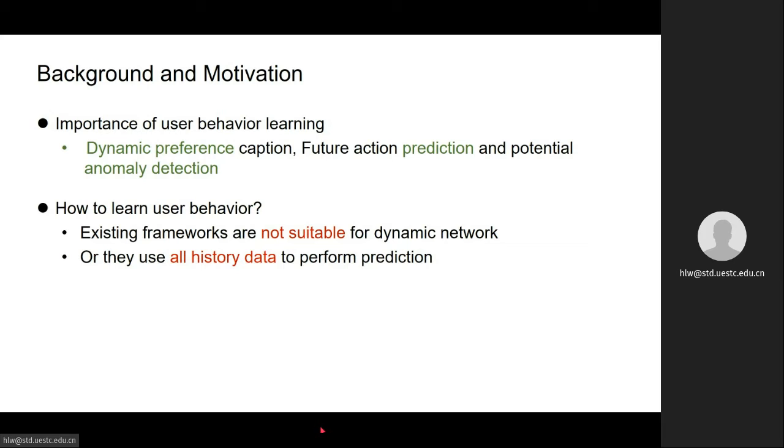Another kind of research can work on temporal networks, but they usually use all the historical data to perform future action predictions, such as link prediction. So it inevitably introduces a lot of noise, but not all historical data are useful for future action prediction.